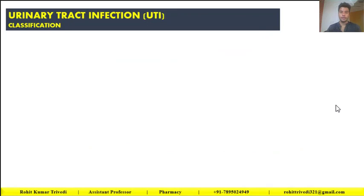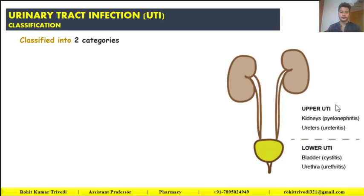Now, the classification or types of urinary tract infections. Basically, it is classified into two broad categories: the upper UTI and the lower UTI. You can observe in this figure — this row divides the figure into two separate parts. The upper part has the kidneys and the ureter; the lower part has the bladder and urethra.